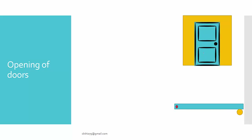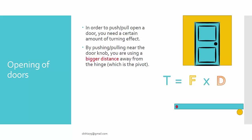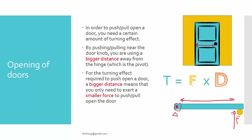But why? In order to push or pull open the door, you need a certain amount of turning effect, which is defined by force times perpendicular distance. By pushing or pulling near the door knob, you're using a larger distance away from the hinge, which is the pivot. Using a large distance means you don't need as much force to generate the required torque.